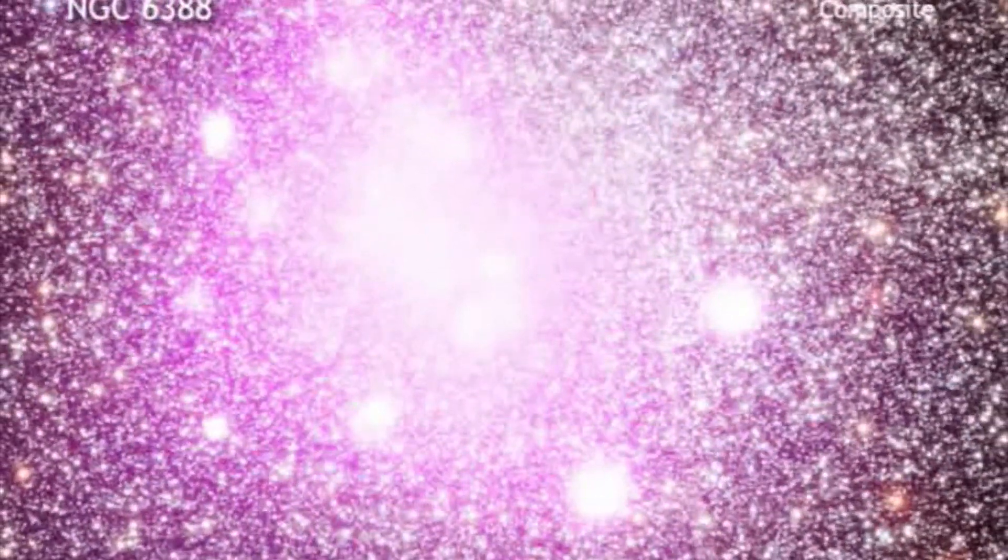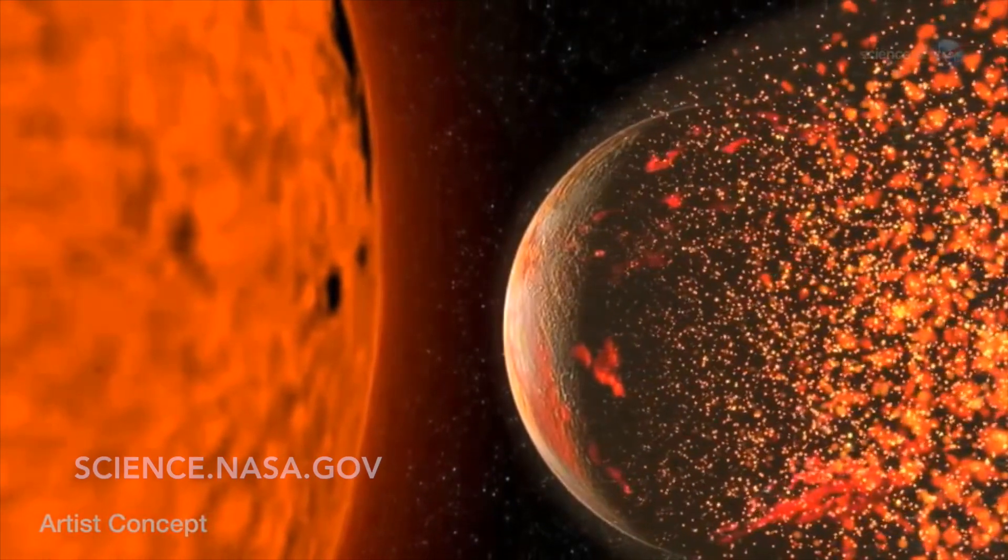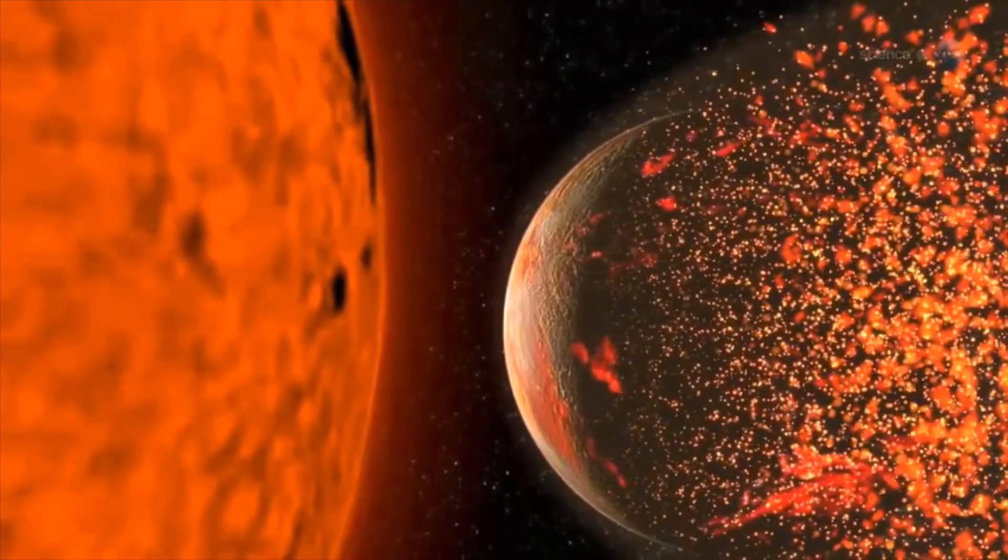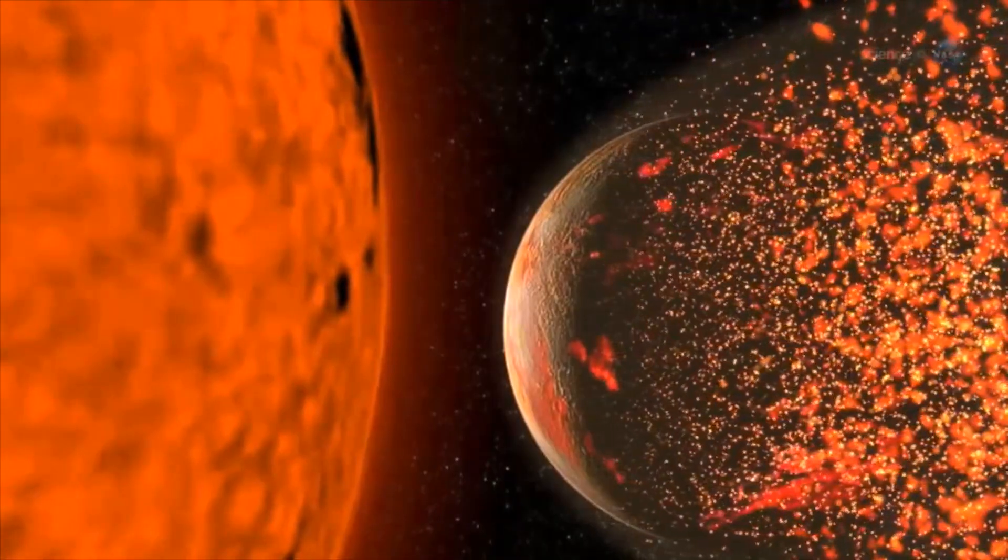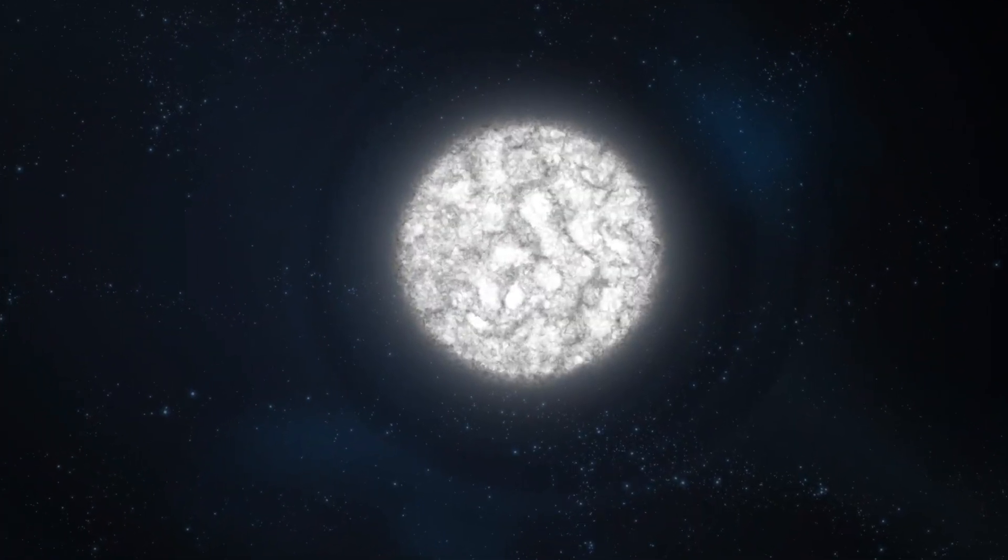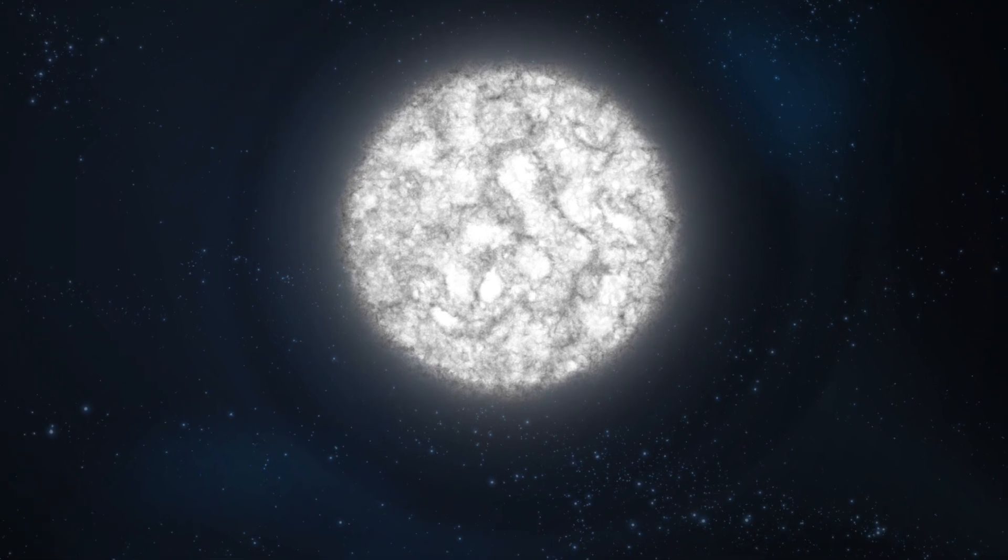If a planet were to pass too close to the small hyperdense core left behind at the end of a star's life, in fact a star much like our own Sun, it might be sucked in by the intense gravity and torn to pieces.